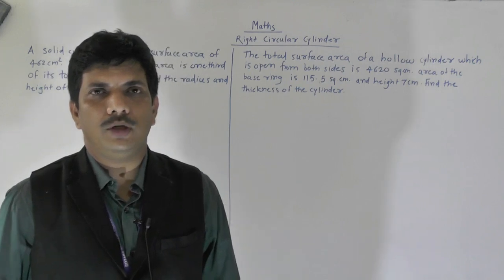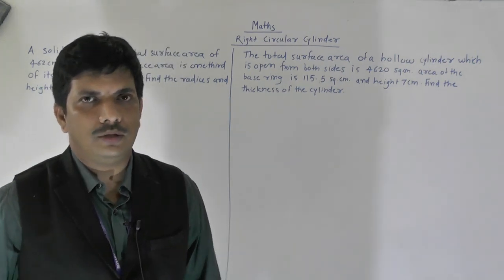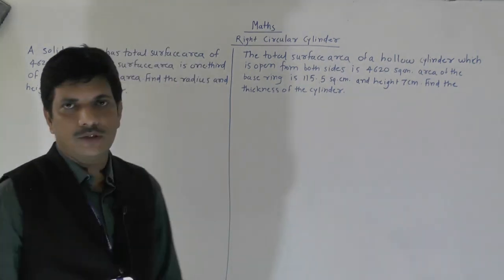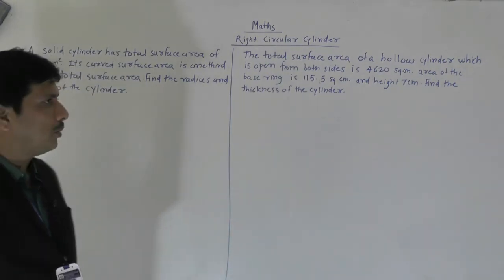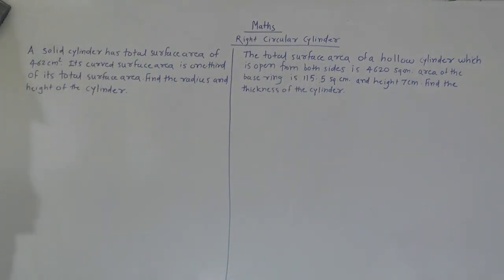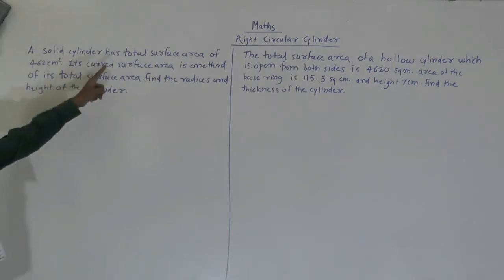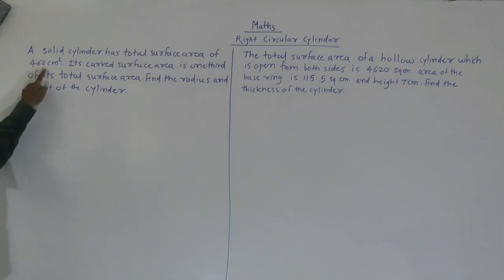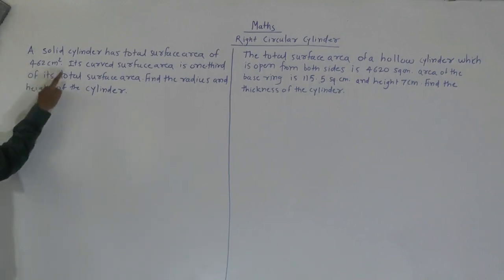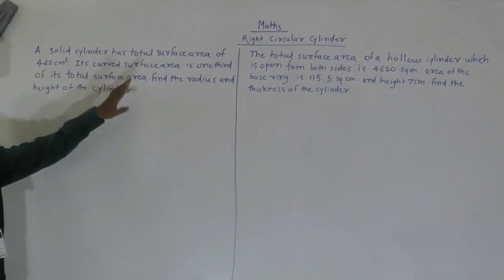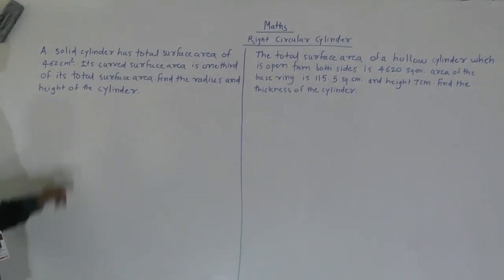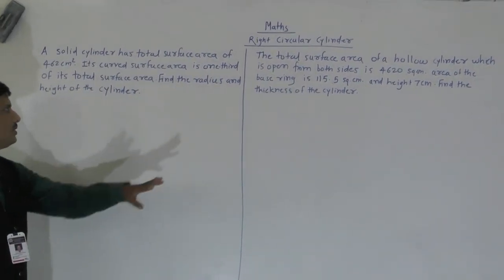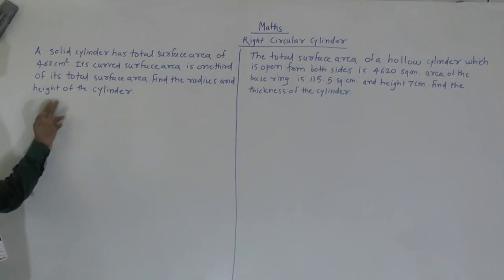Hello everybody. Today we are going to see some more problems of the right circular cylinder. Today's first problem is: a solid cylinder has a total surface area of 462 cm². Its curved surface area is one-third of its total surface area. Find the radius and height of the cylinder.